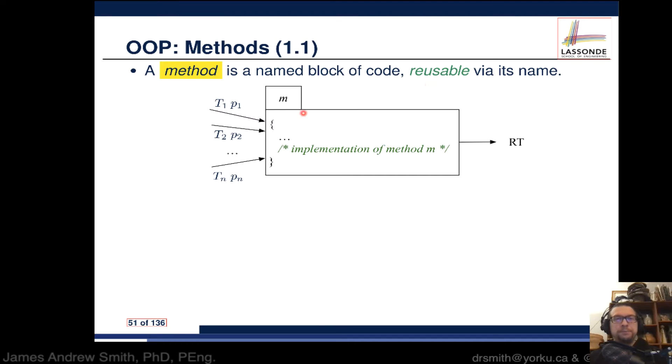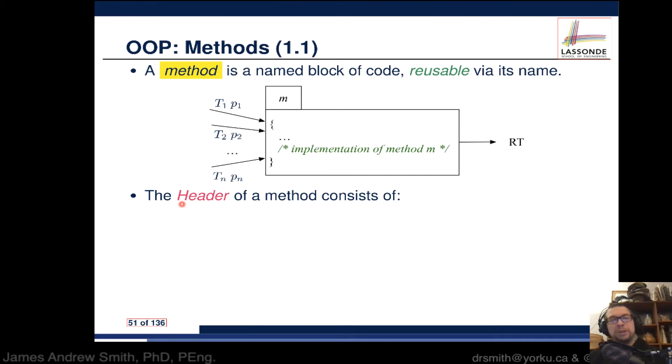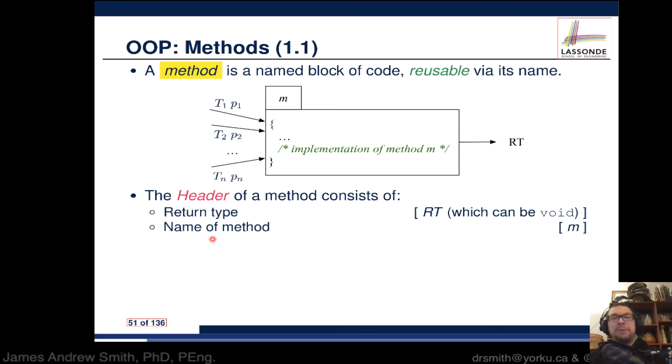A method has different parts: inputs, outputs, names, and implementation. The header of a method consists of a return type, which could be an integer, floating point, string, or void (nothing). You also have the name of the method.